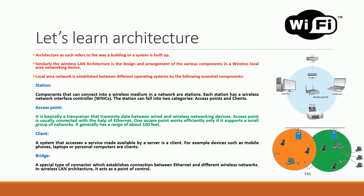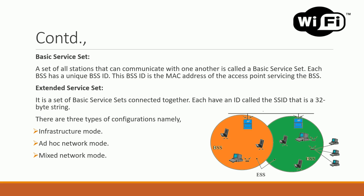A client is the one who gets connected — a system that accesses services made available by a server. My mobile phone is a client; when I connect to a Wi-Fi network and use the services offered, I am a client. A bridge is a connector that establishes connection between Ethernet and different wireless networks — just like a bridge connecting two ends of a river where different protocols are spoken on each side.